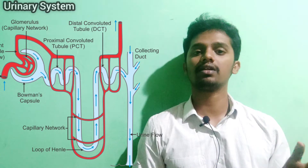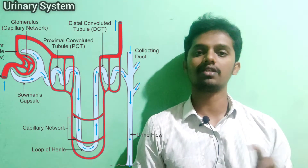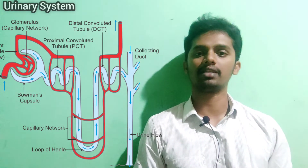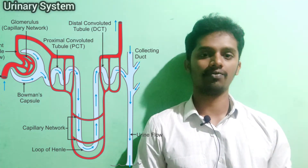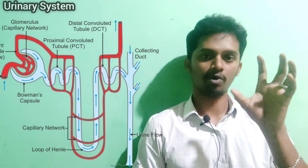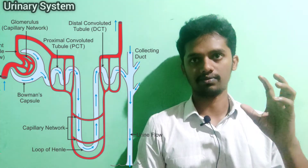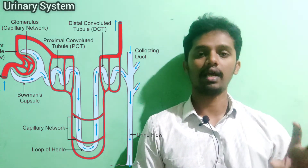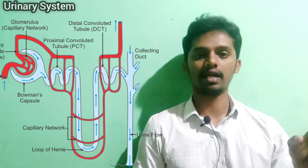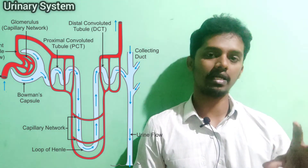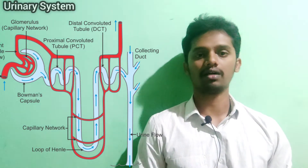How does urine formation occur in the nephron? We have already uploaded a video on the physiology of urine formation. This is the anatomical view of the nephron: glomerulus, Bowman's capsule, proximal tubules, Henle's loop, distal convoluted tubules, and the collecting duct. From the collecting duct, urine flows to the minor calices, then major calices, then the pelvis, then the ureter, and is finally excreted.